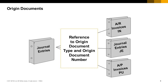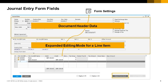Most journal entries refer to other document types, for example PU for AP invoices. The journal entry window is found in the financials module. The window for entering journal entries is divided into three areas: document header data, expanded editing mode for an item, and the items table.